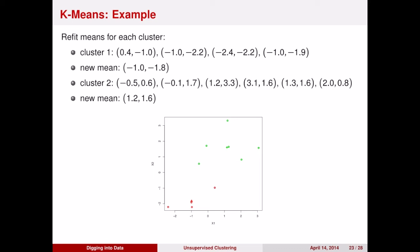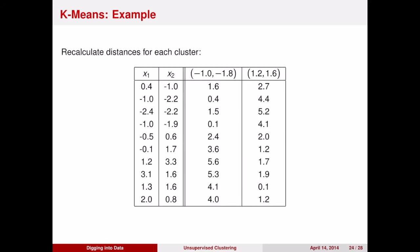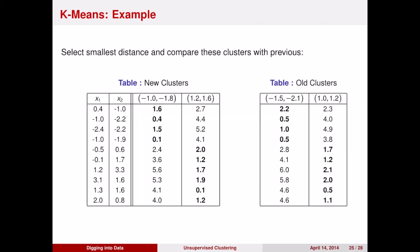Again, we recalculate the distances from each data point to each cluster, and we make a new cluster assignment. But our new cluster assignments haven't changed since the last round. So this means that our algorithm has converged, and we're done. These are our two different clusters.